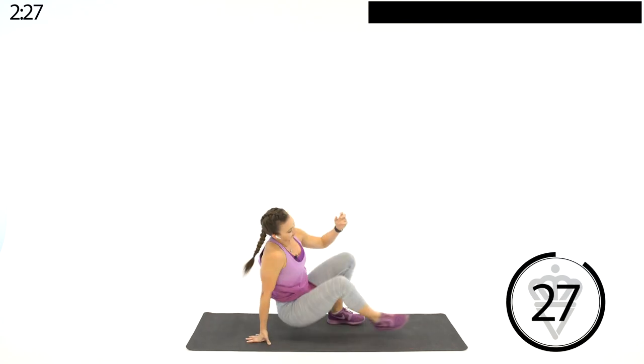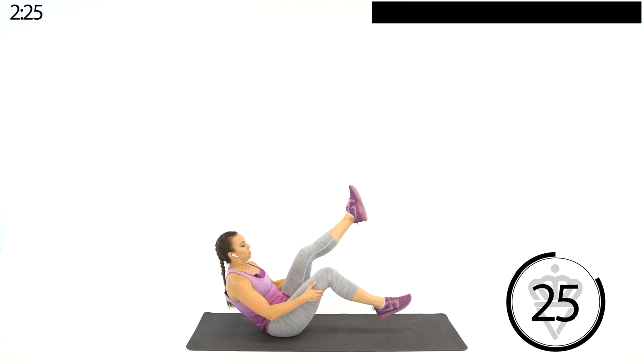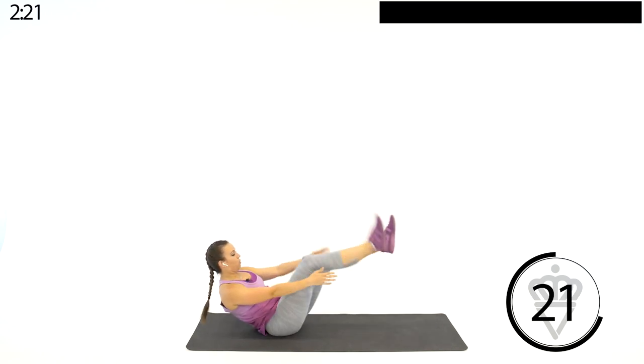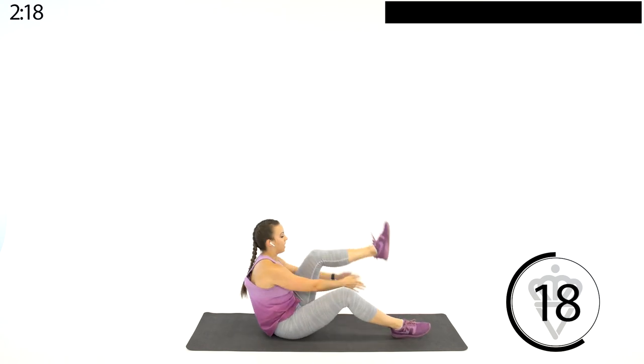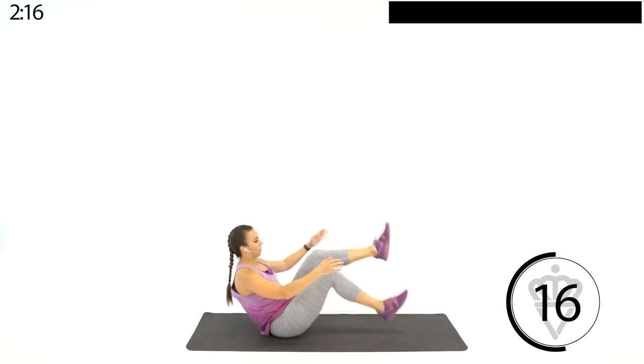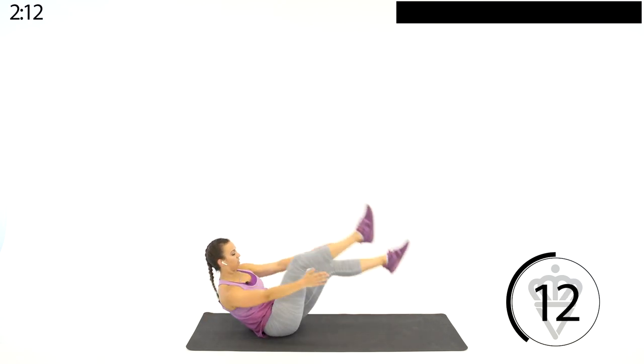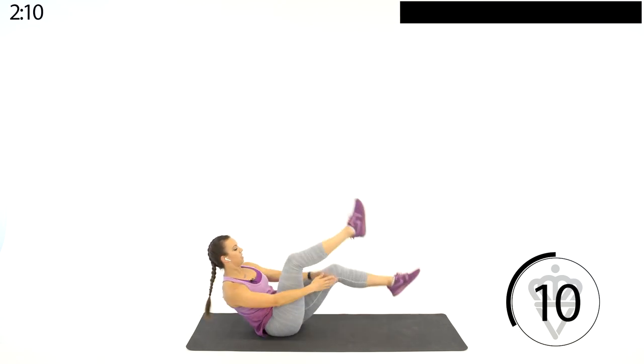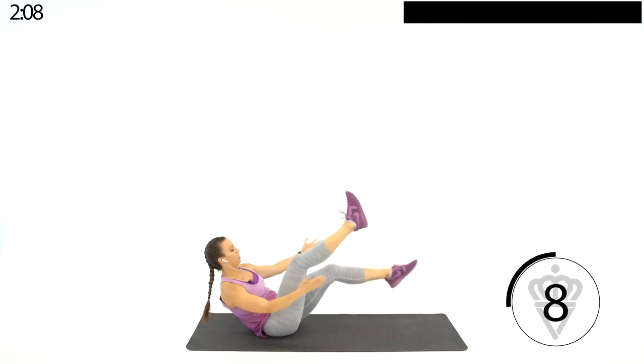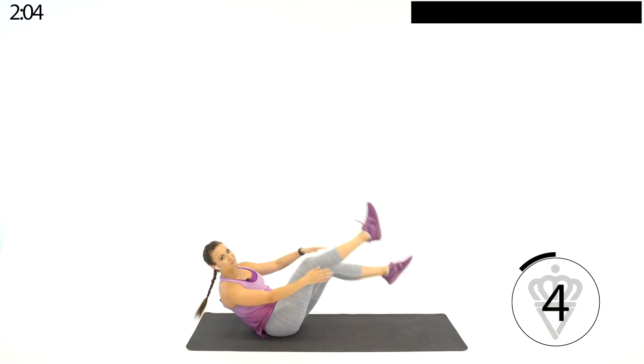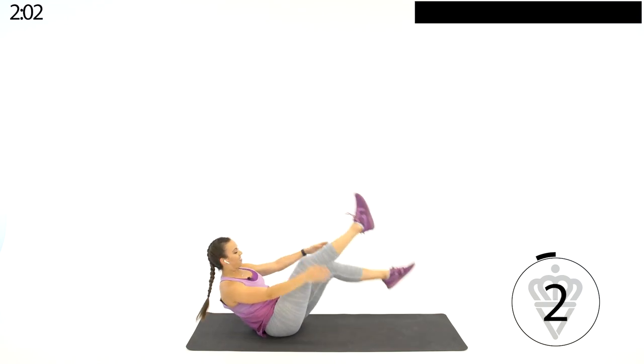Alright, have a seat. Legs up in the air. We're going scissor chops. Modification here, keep one leg down. Alright, keep going. Push those hands under your legs. Chest is up. Core's engaged. Pull that belly button right back into your spine.